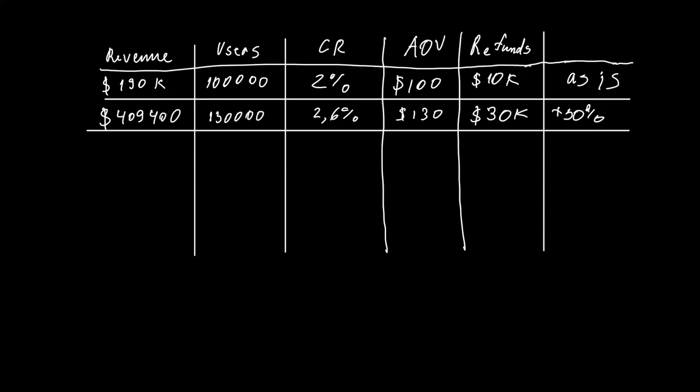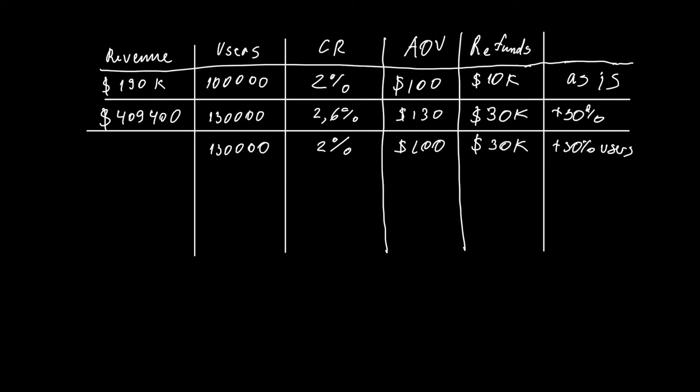In the first case it will be plus 30 percent of users and conversion rate will remain the same. Average order value will remain the same and refunds will be $30k. It means that our store will generate $230k in revenue if we just tweak one metric.